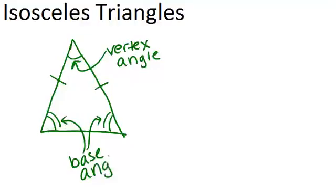And what's interesting about the base angles is that they will always be congruent. Another way of thinking about this is the angles across from the congruent sides will also be congruent. So congruent sides kind of produce congruent angles.